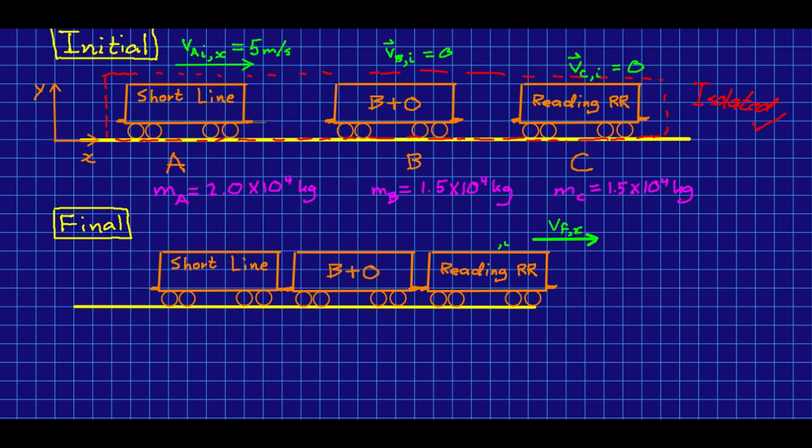Train cars rolling along tracks are quite well isolated. So we know that the momentum of the system is going to be conserved throughout this whole process. And so we can write that the momentum initial, so the total, and I'm only going to work in the x component because everything is along our x direction. So our initial x component of momentum is going to equal our total final momentum, which is just going to be the momentum of the three cars together.